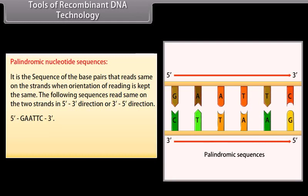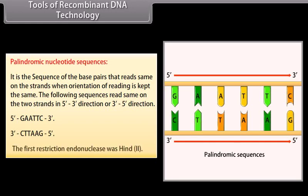For example: 5' — G-A-A-T-T-C — 3' and 3' — C-T-T-A-A-G — 5'. The first restriction endonuclease was HindII.